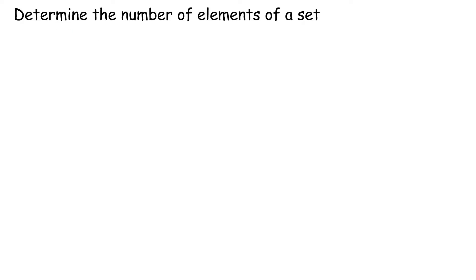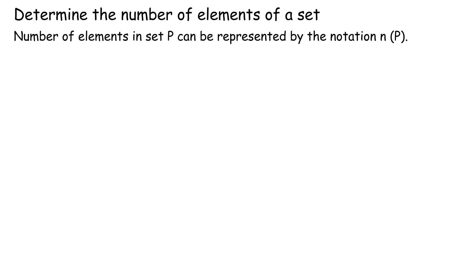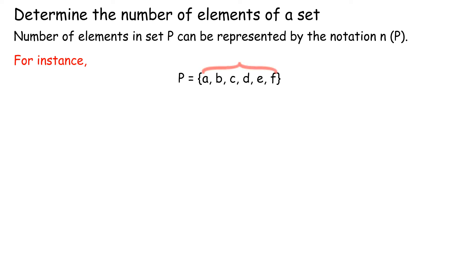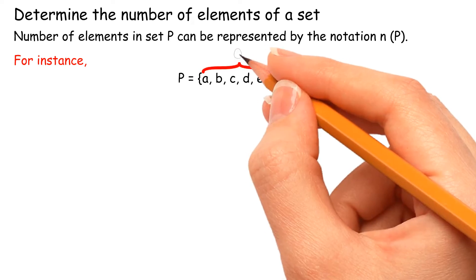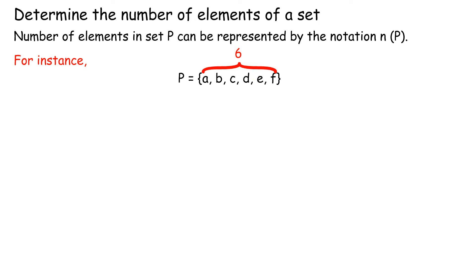Determine the number of elements of a set. The number of elements in set P can be represented by the notation n(P). For instance, P = {A, B, C, D, E, F}. The number of elements in set P is 6. Thus, n(P) = 6.